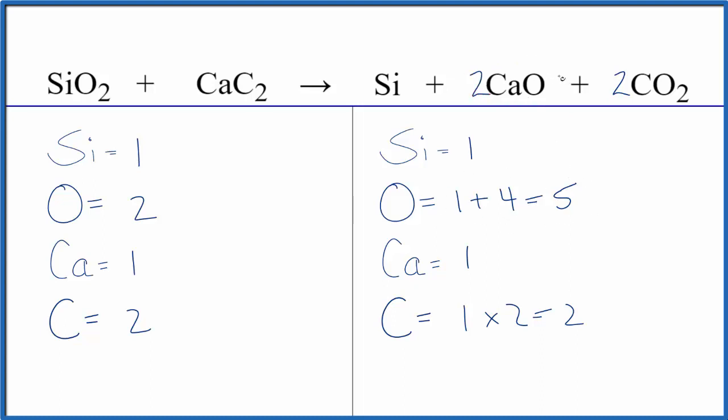If I put a two in front of the CaO, one times two, that gives us two of those. Let's update the oxygens. Two times one is two plus two times two, that's four. So we'd have six. That's a little bit better because we have even numbers. But now the calciums aren't balanced.